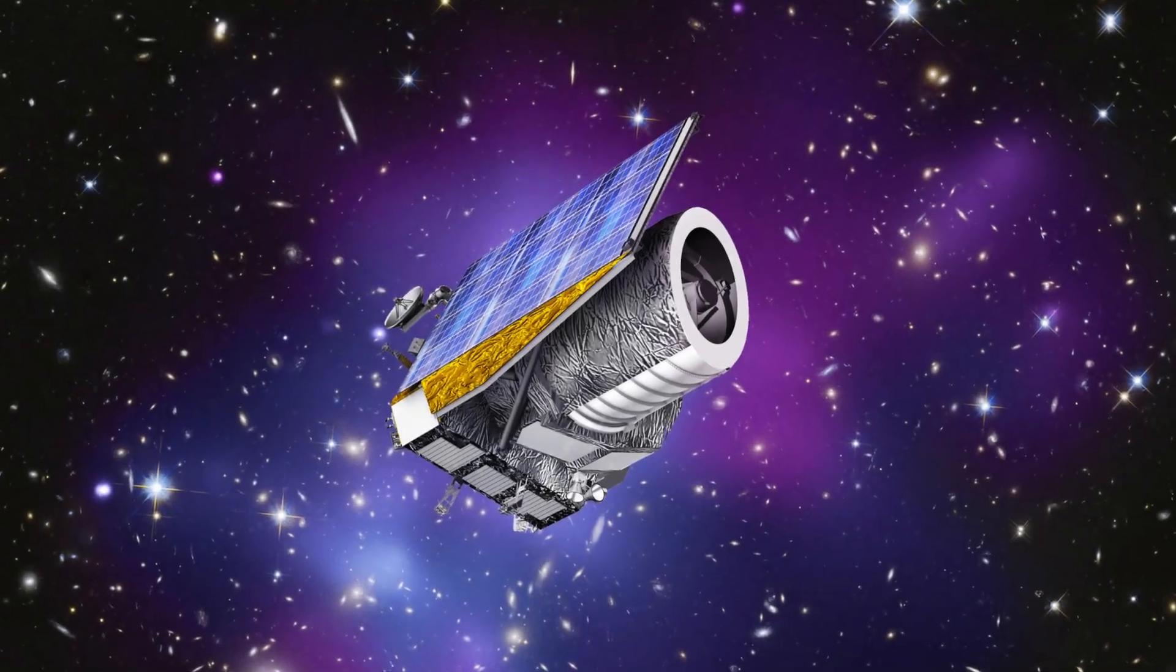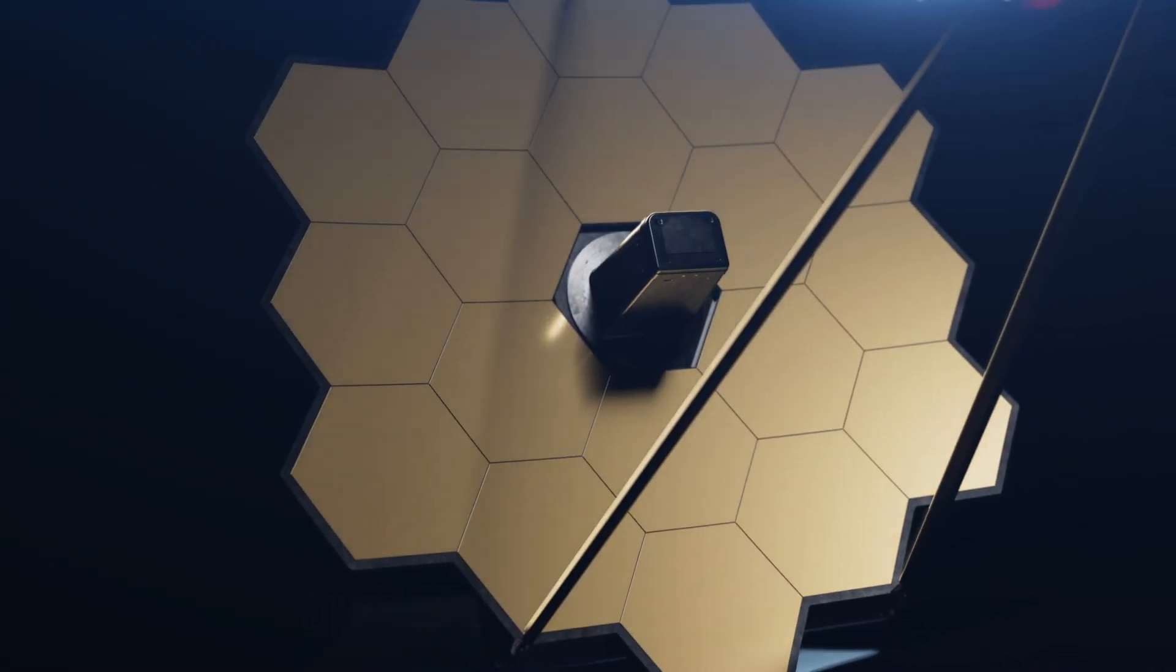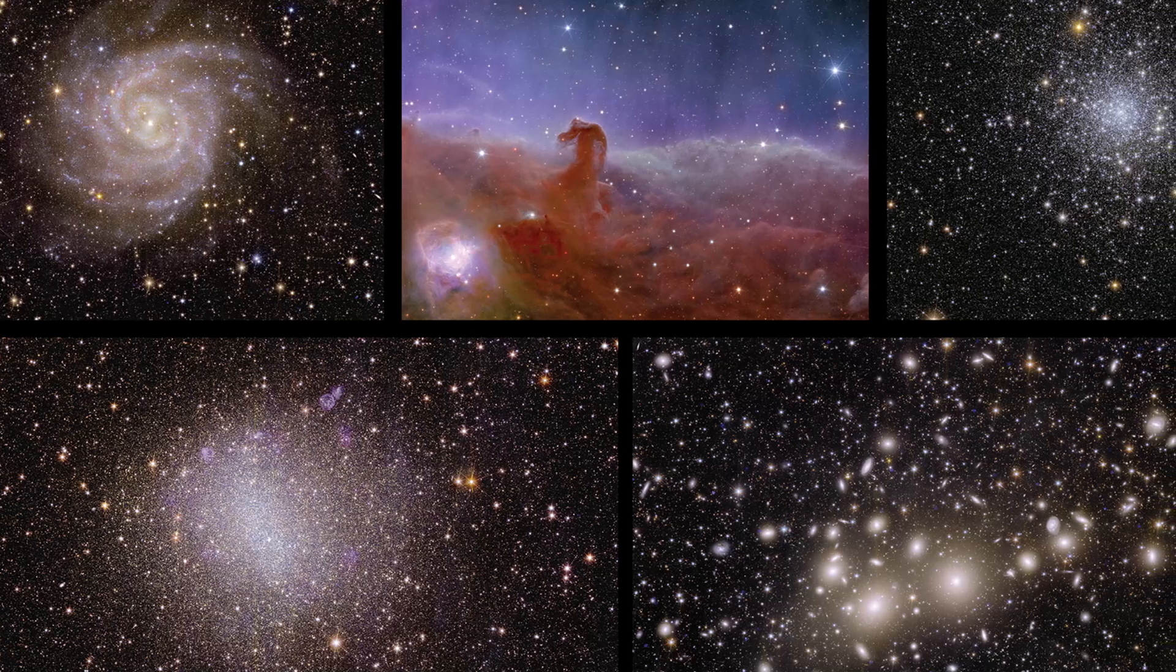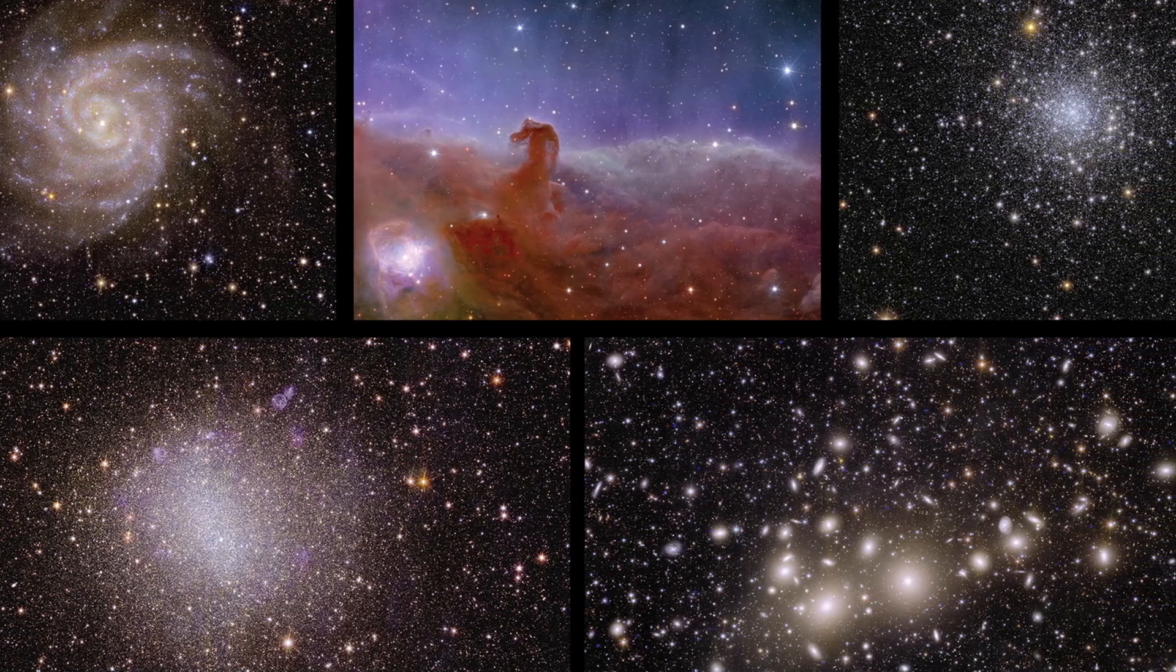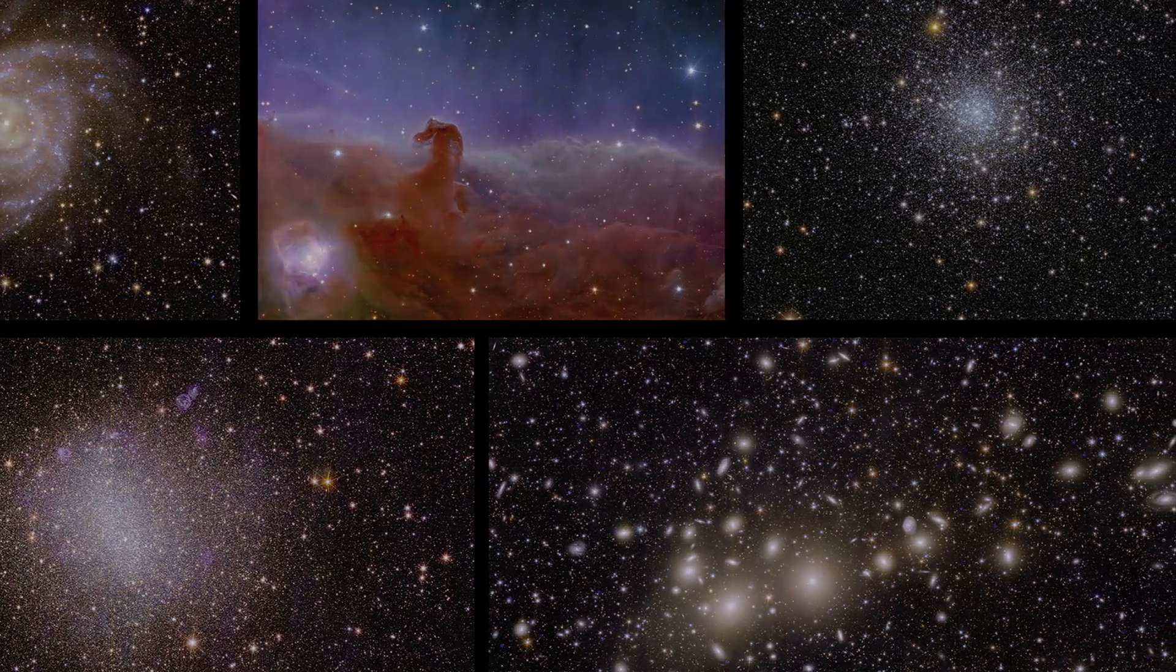However, what sets the Euclid Space Telescope apart? How does it differentiate itself from the $10 billion James Webb Space Telescope? Moreover, what makes these five images captured by Euclid from the outer edges of the universe so extraordinary? Let's delve into these questions one by one.